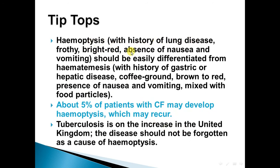Hemoptysis with a history of lung disease, frothy or bright red appearance, and absence of nausea and vomiting should be easily differentiated from hematemesis, which has a history of gastric or hepatic disease, coffee-ground or brown appearance, and presence of nausea, vomiting, and food particles. About 5% of patients with cystic fibrosis may develop hemoptysis, which may recur. Tuberculosis is an increasing disease and should not be forgotten as a cause of hemoptysis.